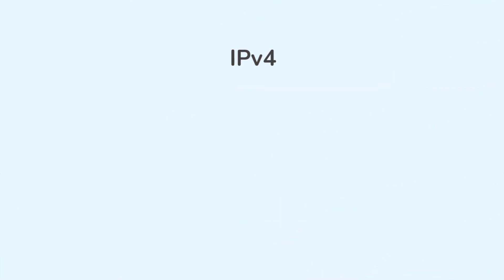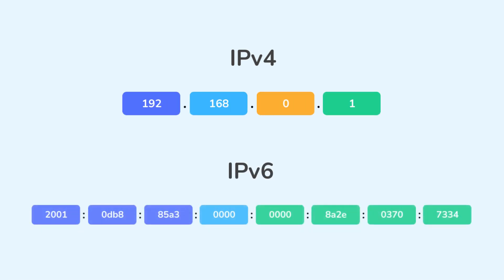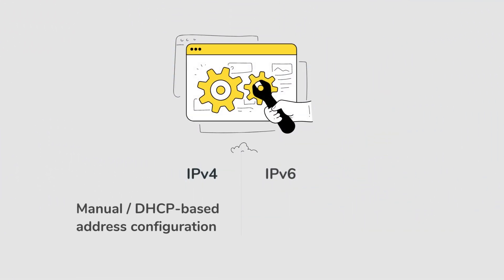IPv4 addresses are written in decimals with periods, while IPv6 addresses are written in hexadecimal with colons. IPv4 often requires manual or DHCP-based automatic address configuration, whereas IPv6 supports automatic configuration through stateless address auto-configuration.